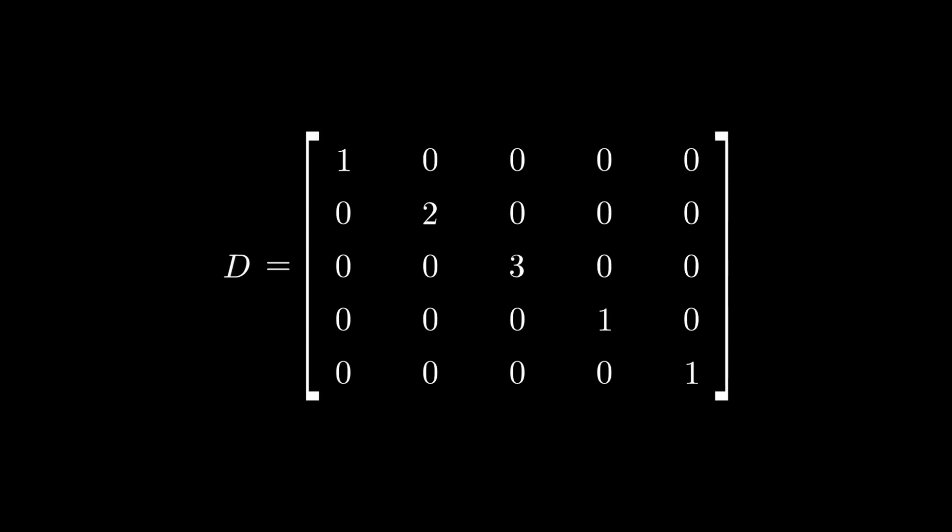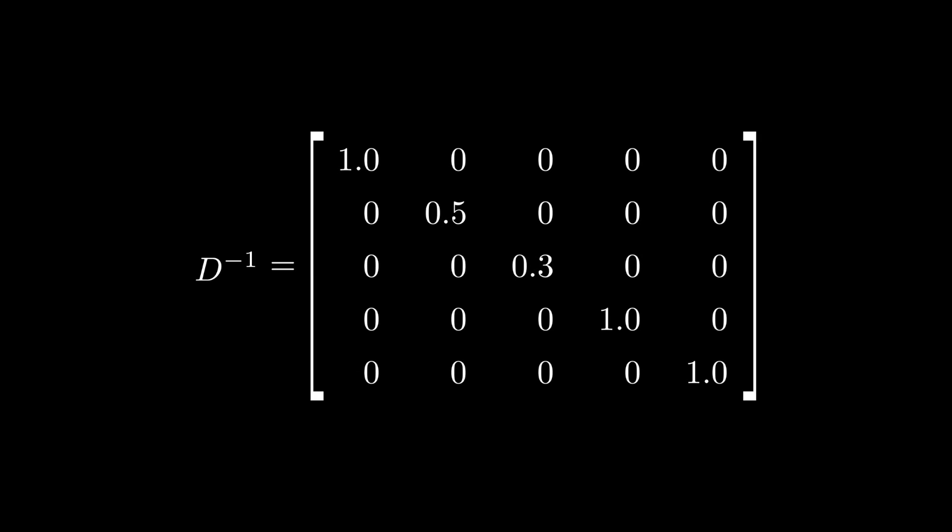Now, if we take the inverse of this matrix, that amounts to the same thing as inverting each of the diagonal elements. So, the new diagonal values would be 1, 1 half, 1 third, 1, and 1.